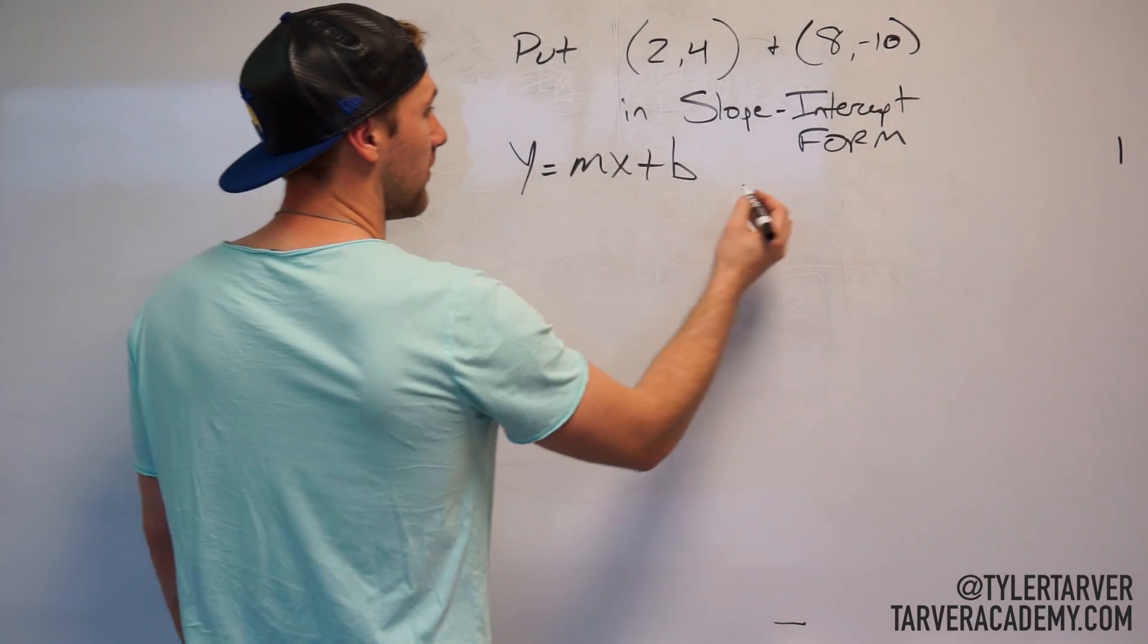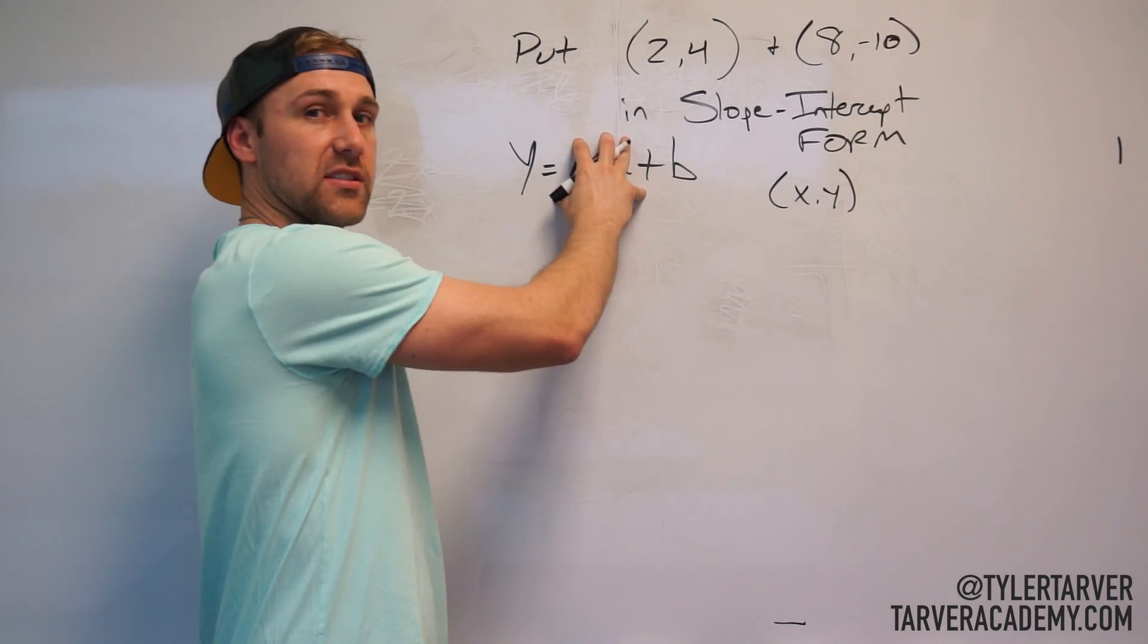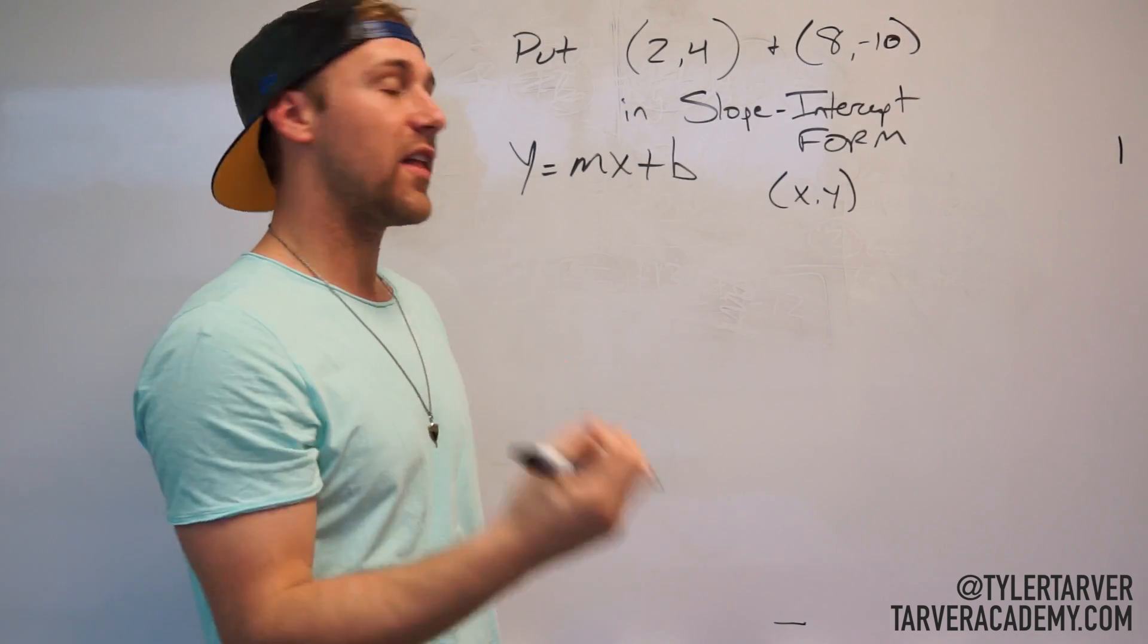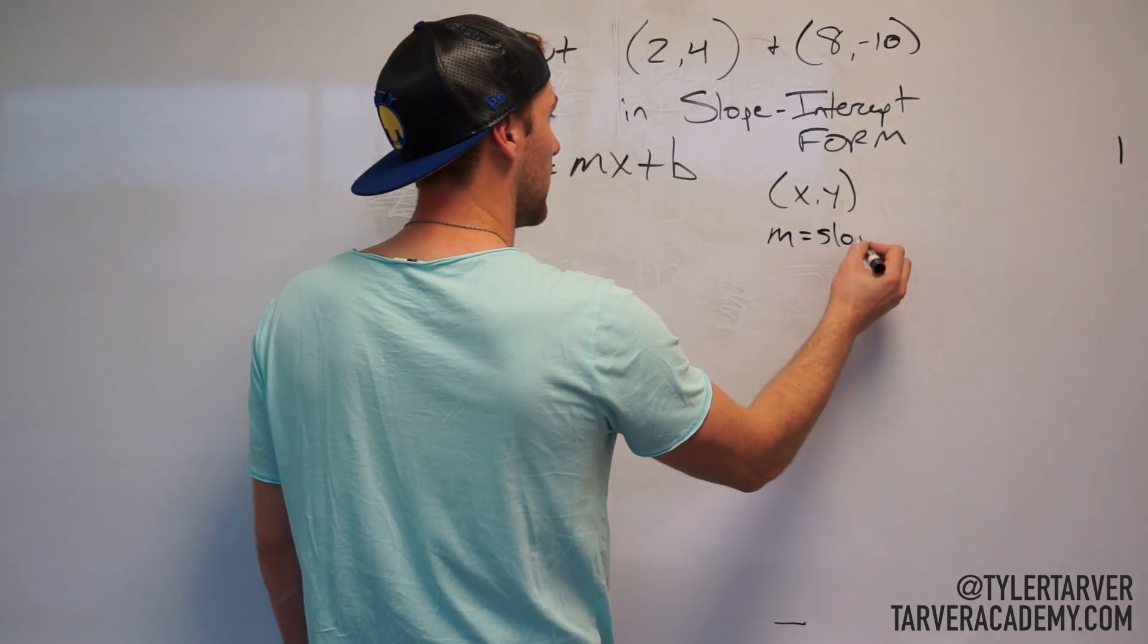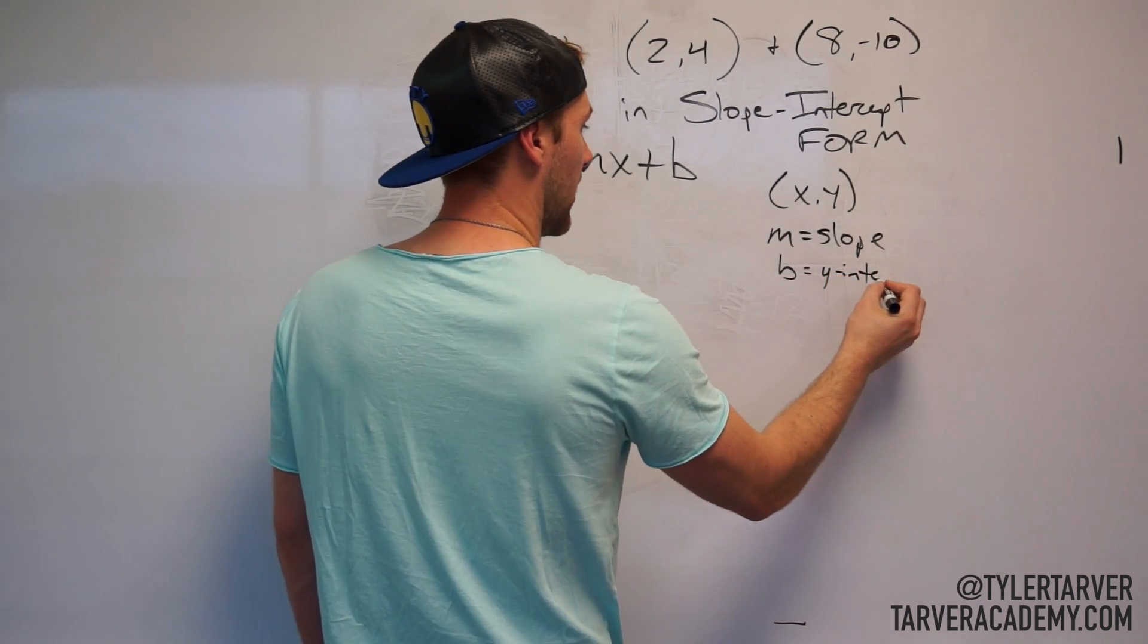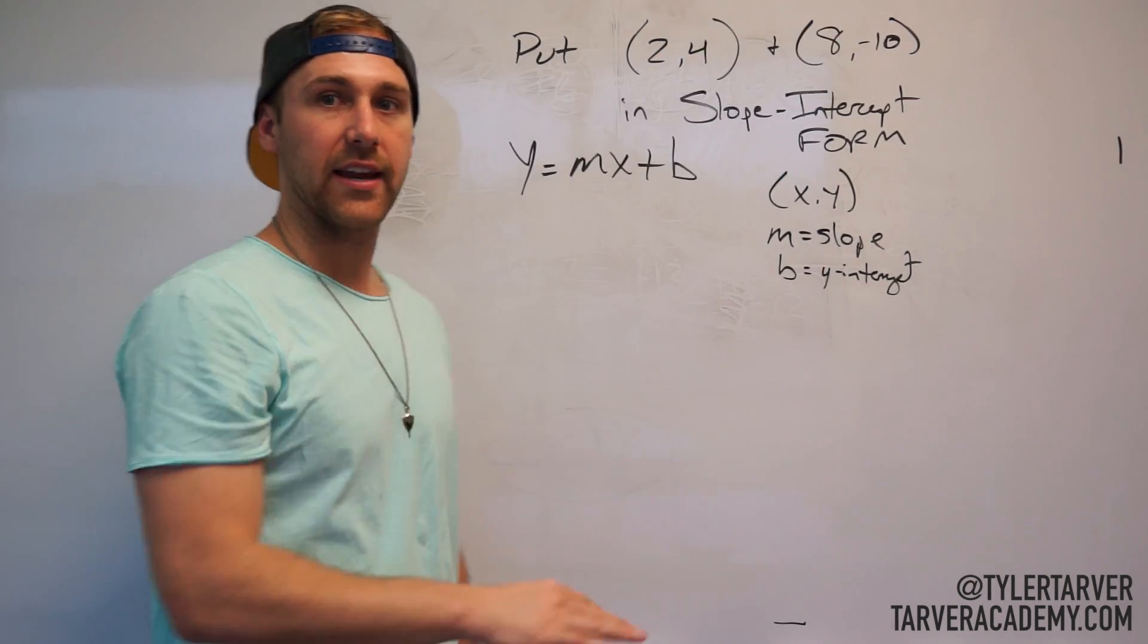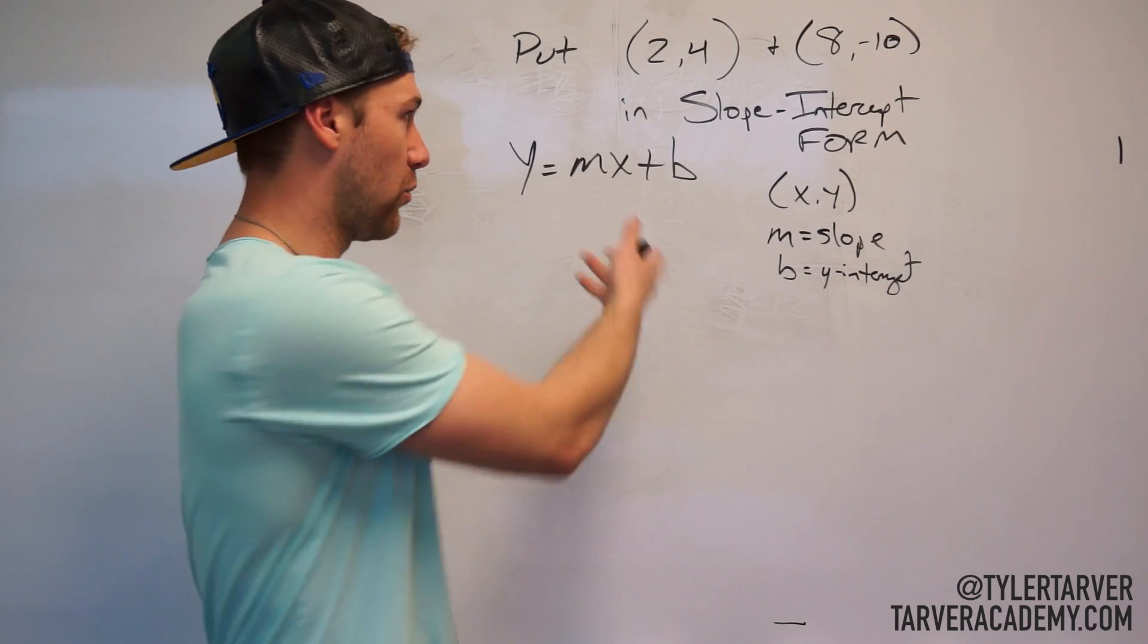X and y are your coordinates, okay? They can be any coordinate on this line because this represents the equation of a line, so x and y would be any coordinate on that line. M is your slope and b is your y-intercept, okay?